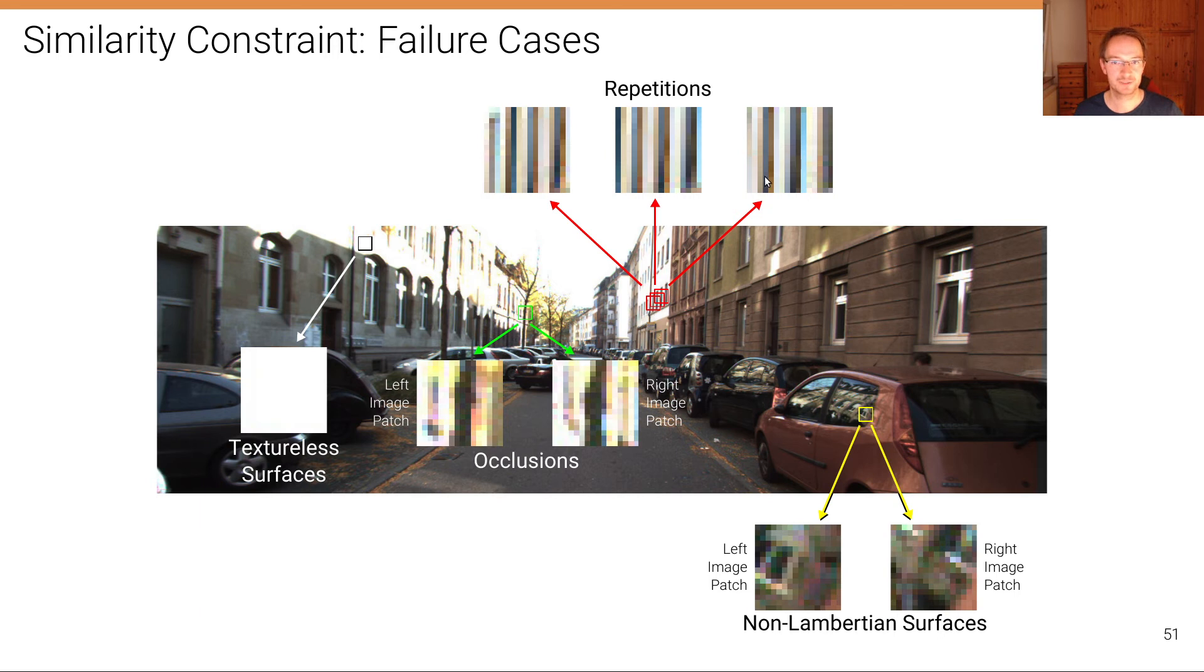Another challenge are repetitions. If we have structures in the image, here we have three different patches extracted, that look very similar to each other, then matching becomes suddenly very ambiguous. All of these patches are so similar to each other that it's really almost impossible to distinguish what is the correct one from the wrong.